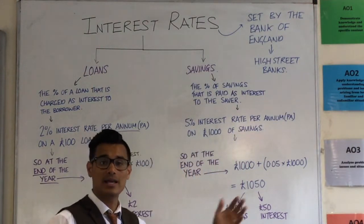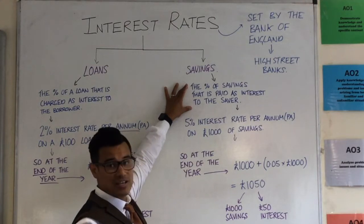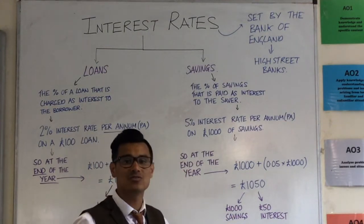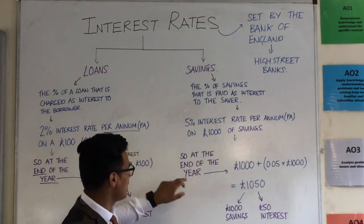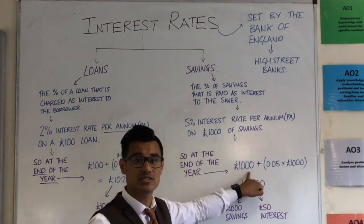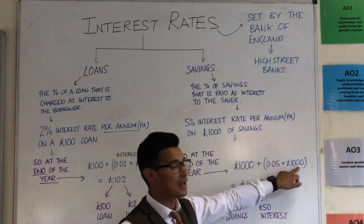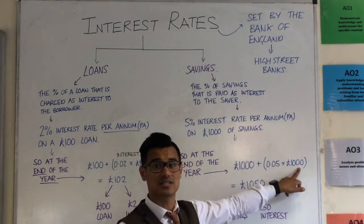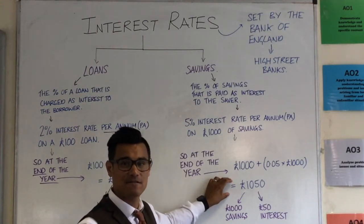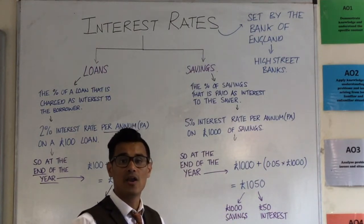On the other side, it works exactly the same way if you have savings. The definition is the percentage of your savings that is paid as interest to the saver. Example: a 5% interest rate per annum on £1,000 of savings. At the end of the year you'd still have your £1,000 of savings plus the interest you have earned. Calculate that as 5%, so 0.05, times by £1,000. Add that together — your original savings plus the interest comes to £1,050. £1,000 is your original savings and £50 is the interest.